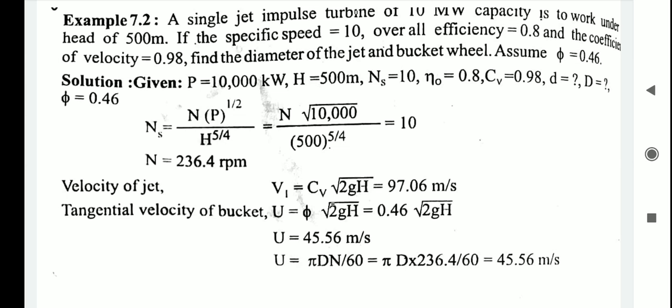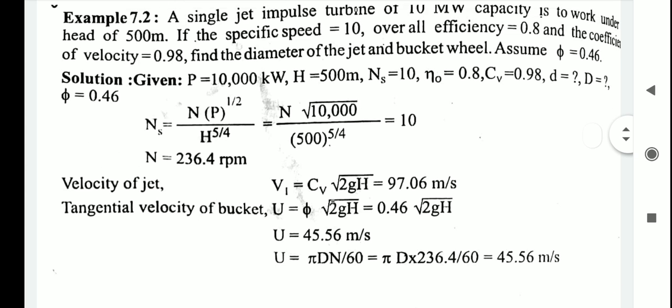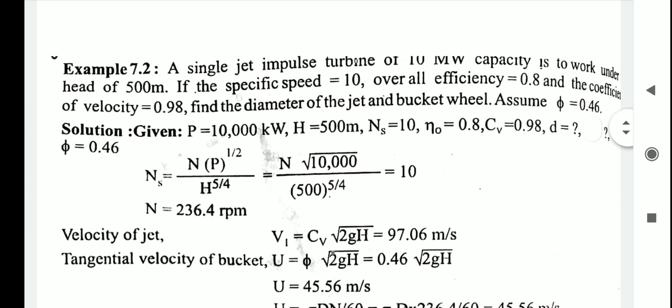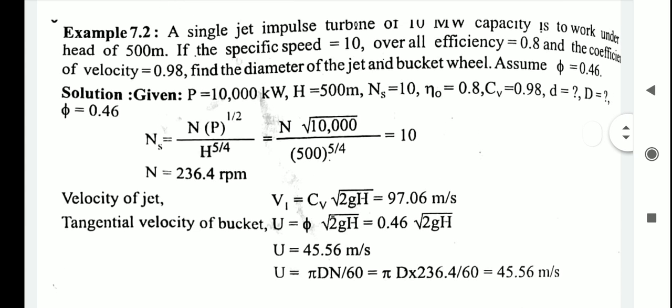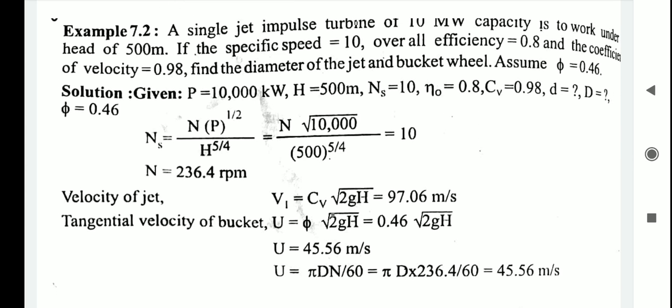Write down all the given data: power P = 10,000 kilowatt, head H = 500 meters, specific speed Ns = 10, overall efficiency = 80%, and Cv = 0.98. We need to find the wheel diameter D (capital D) and the jet diameter d (small d).